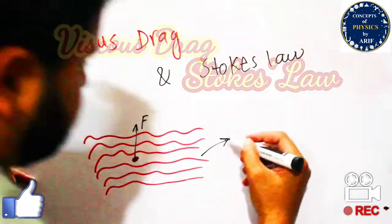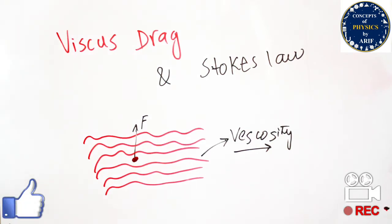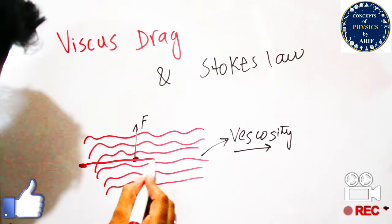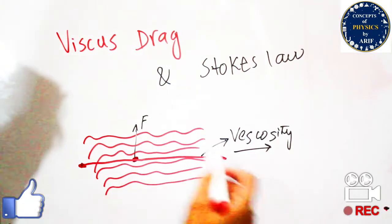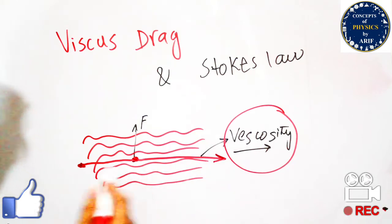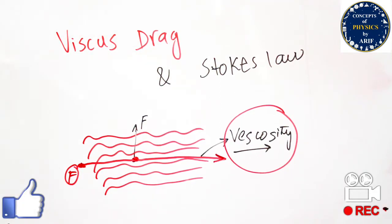Viscosity has different coefficients and comes from the frictional or retarding force. Materials like water, honey, and coal tar have different viscosities. Honey has high viscosity because it is very thick — passing an object through honey or coal tar is very difficult. The viscosity of air is very low, and viscosity of water is also low compared to honey and coal tar.